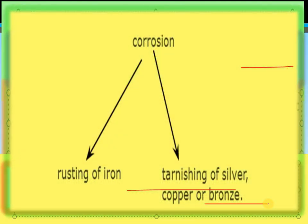Corrosion basically has two types. One is rusting of iron, and the other one is tarnishing of silver and corrosion of copper or bronze.